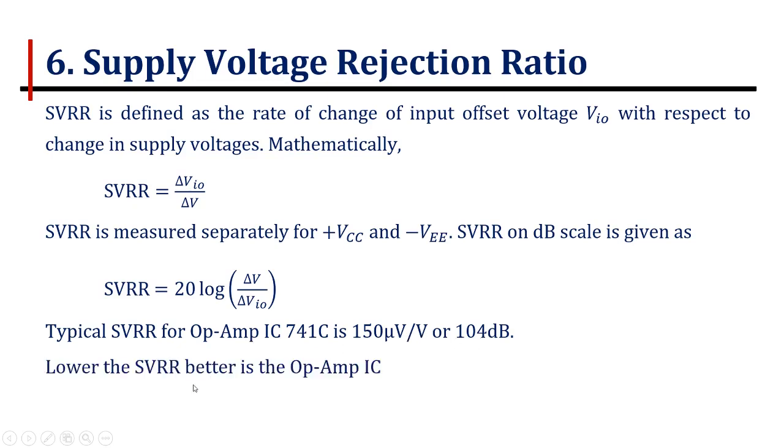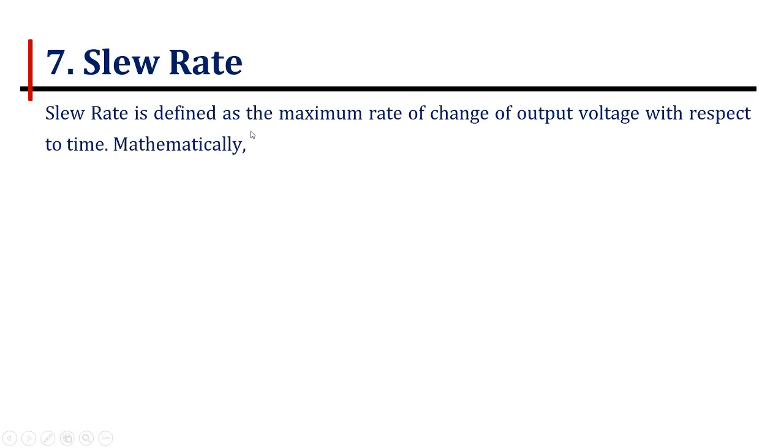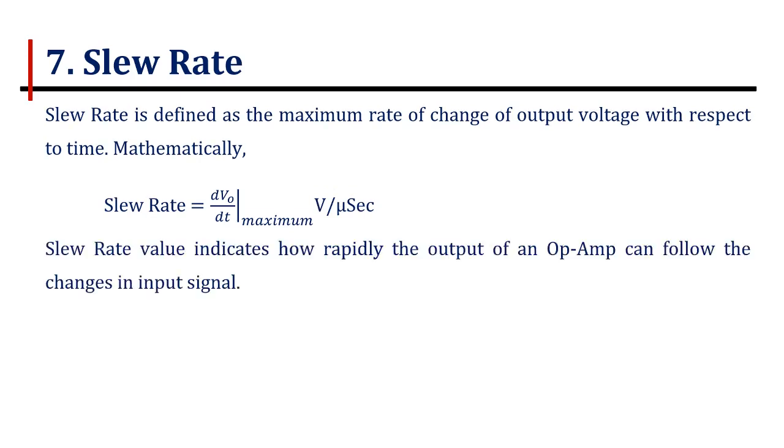The seventh important parameter of op-amp is slew rate. Slew rate is defined as maximum rate of change of output voltage with respect to time. Mathematically, slew rate is maximum of dV upon dt, which is measured in volts per microsecond. The slew rate value indicates how rapidly the output of an op-amp can follow the changes in the input signal.